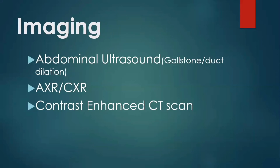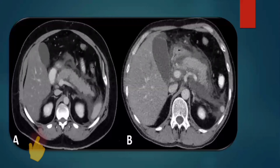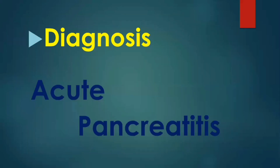We also use abdominal X-ray and chest X-ray. Abdominal X-ray is used to see dilated proximal bowel loops adjacent to the pancreas, and chest X-ray is used to see pleural effusion or signs of ARDS. In imaging, one image shows localized edema around the pancreas, while another shows extensive fluid collections around the pancreas.